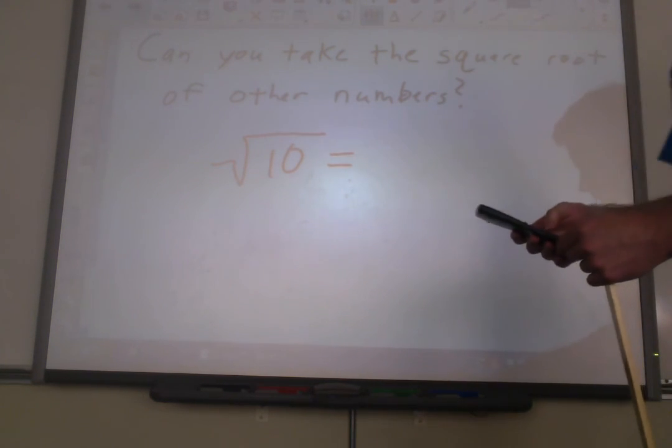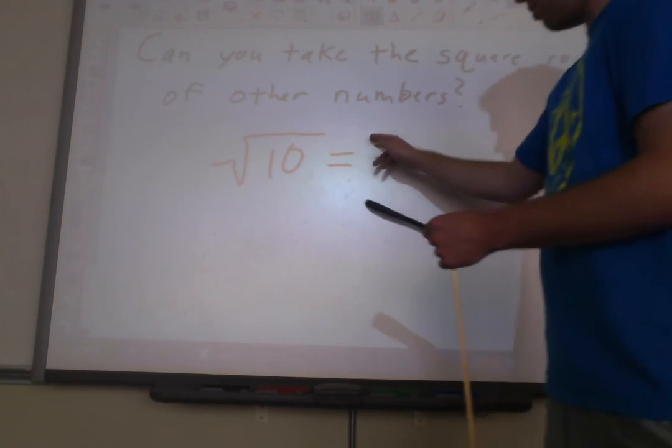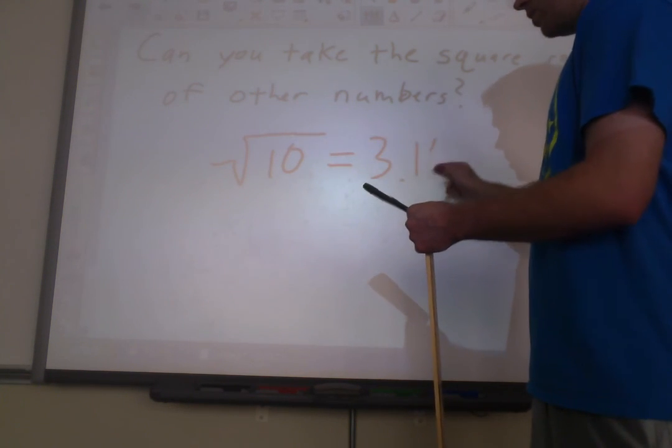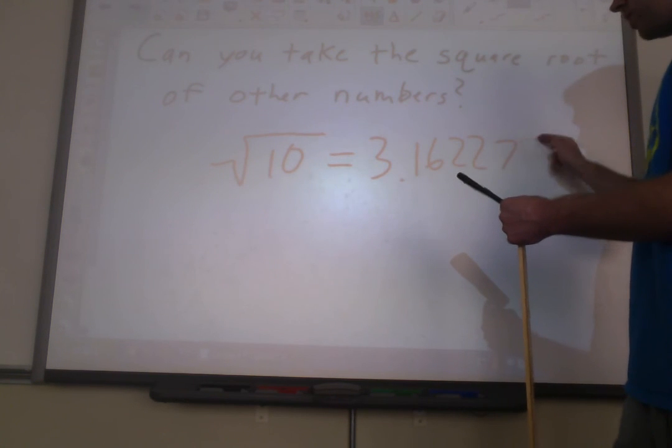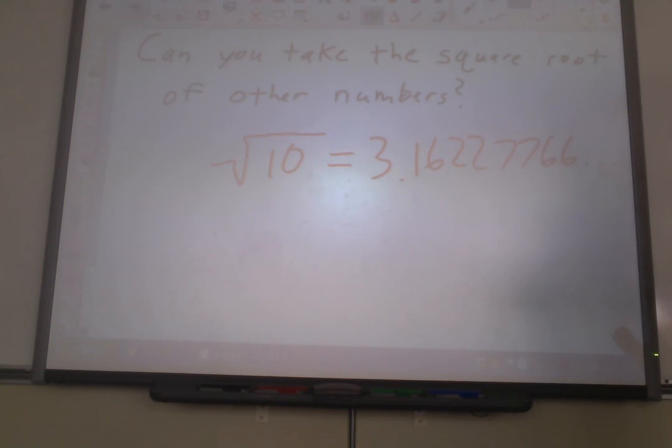If you do take that square root of 10 on a calculator, you end up getting 3.16227766 dot dot dot. It will go on forever and ever and ever. Okay? And that's going to be true of any number that you try to take the square root of if it's not a perfect square. You're going to get some long decimal that goes on forever and ever and ever. Okay? So can you take the square root? Yes. But you need a calculator and you're going to get some really weird answer like this.